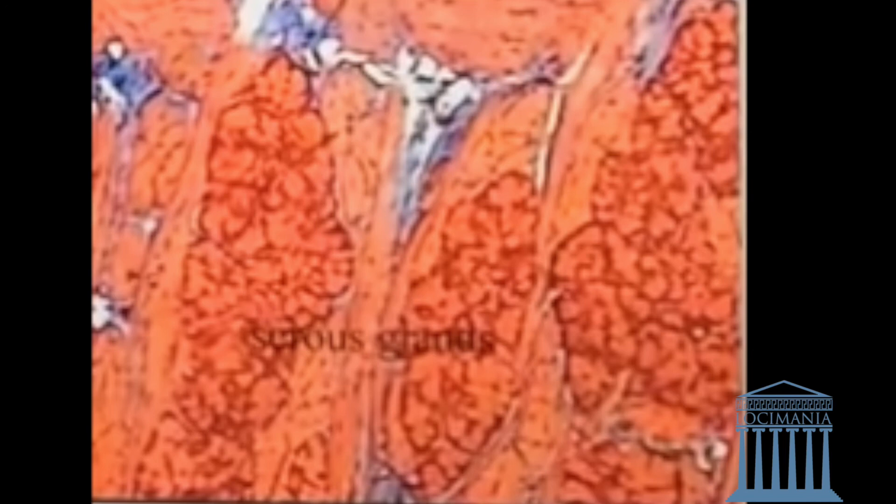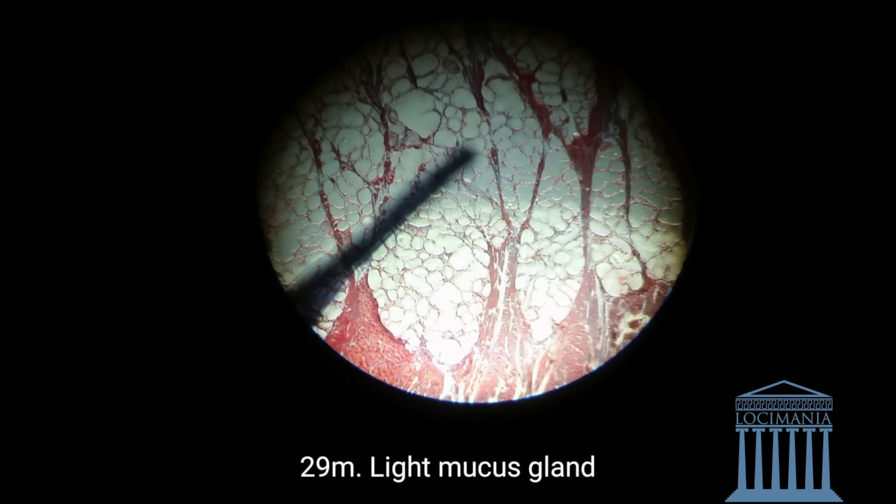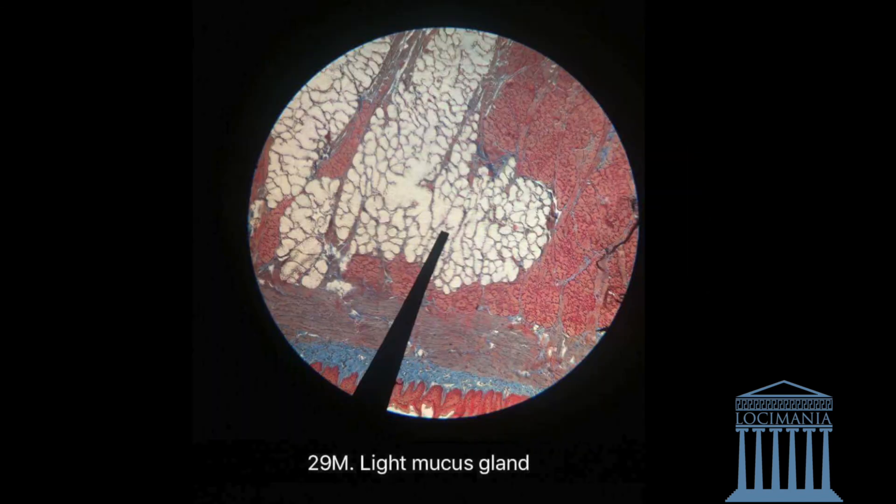I'm going to show you two specimens with the light mucus glands — they're really easy to distinguish. Here we have the light mucus glands of one specimen, and here we have another specimen showing them as well. That was all. Thank you, and please come again.